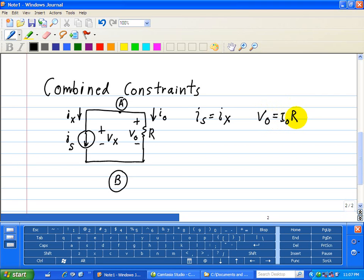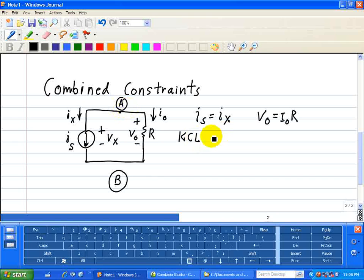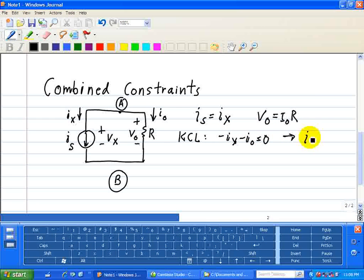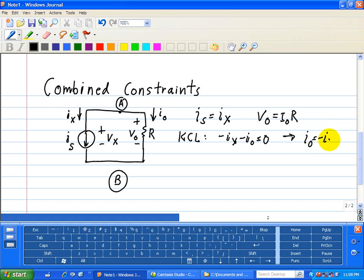We need two more equations since we've got four unknowns. So we'll start with KCL at node A, and we see that the outgoing current is minus IX minus IO equals zero. And that implies IO is equal to minus IX.